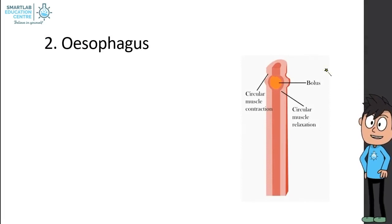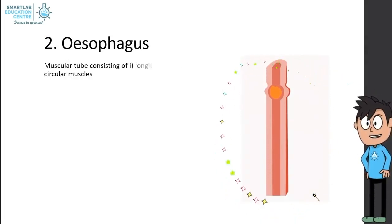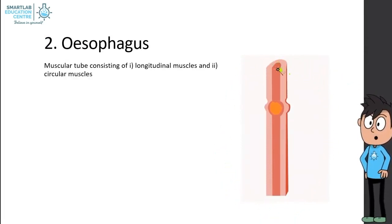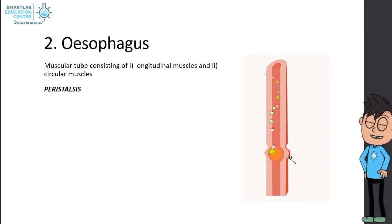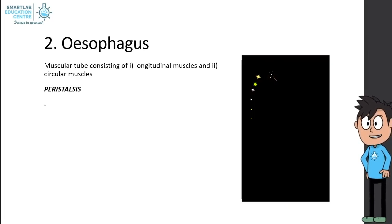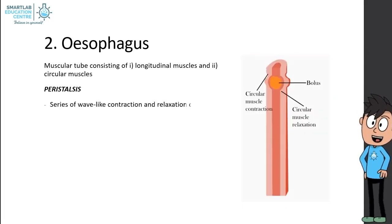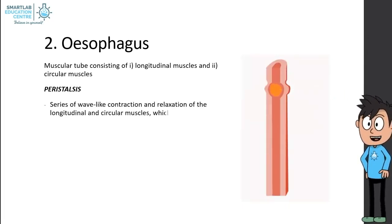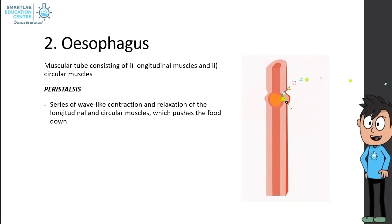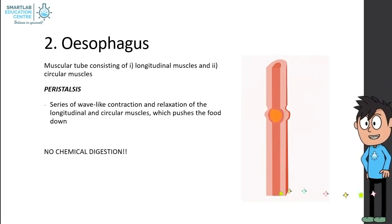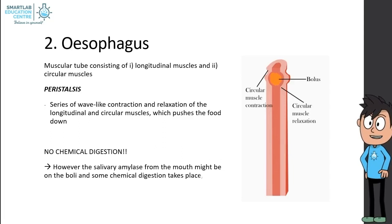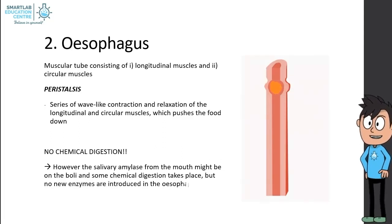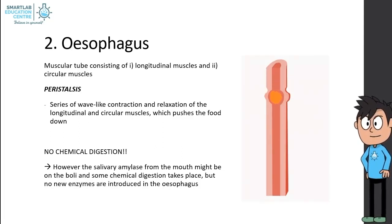The second organ of the digestive system is the esophagus. It is a muscular tube consisting of longitudinal muscles and circular muscles. It transports food from the mouth to the stomach using peristalsis — a series of wave-like contractions and relaxations of these muscles which push the food down. There is no chemical digestion by the esophagus; however, salivary amylase from the mouth may still be on the bolus, so some chemical digestion continues, but no new enzymes are introduced.